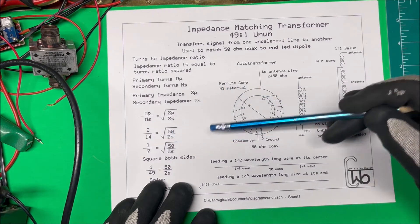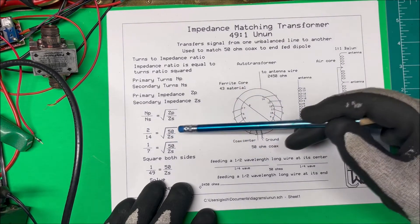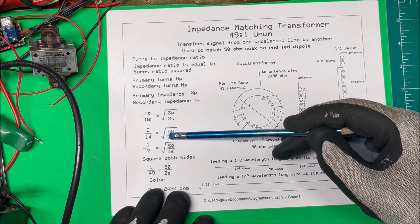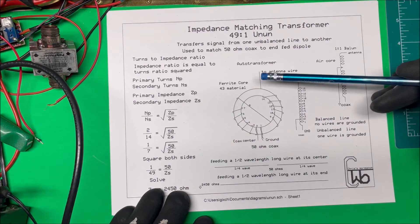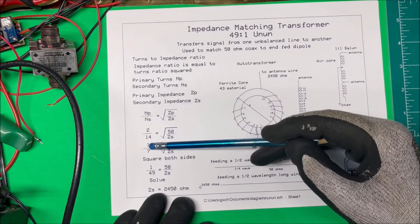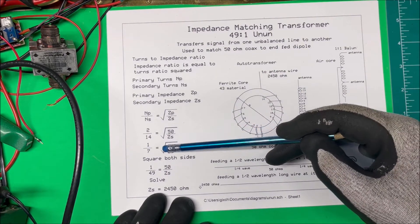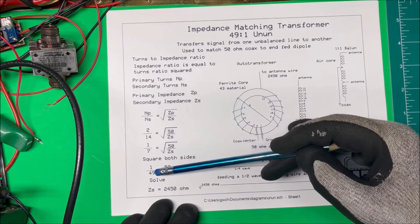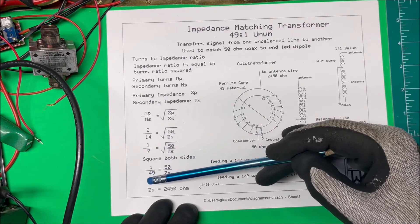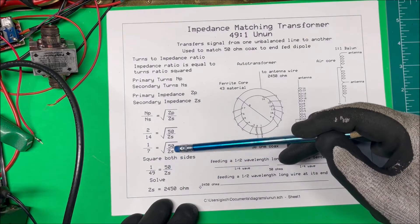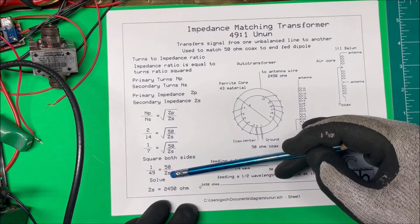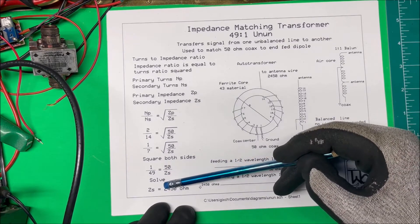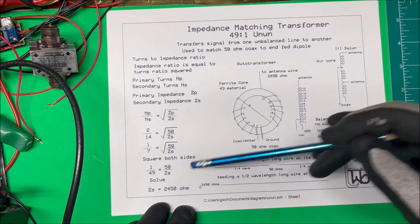So here we are 2 to 14 and we have 50 ohm coax coming in here. This is an unknown value here, what the impedance will have up here. So 2 to 14, that's 1 to 7, and to get rid of the square root we square both sides. So if we square this over here it's going to be 1 over 49, 7 times 7 is 49, and then we know this 50 ohm coax and this is our unknown value here. So we just have to cross multiply that and it comes out to 2,450 ohms.